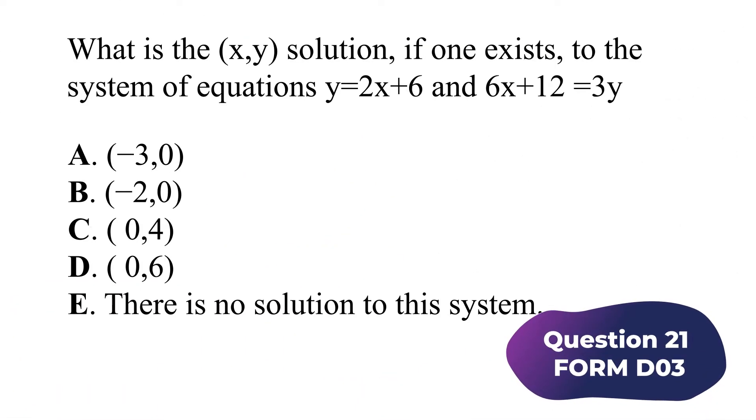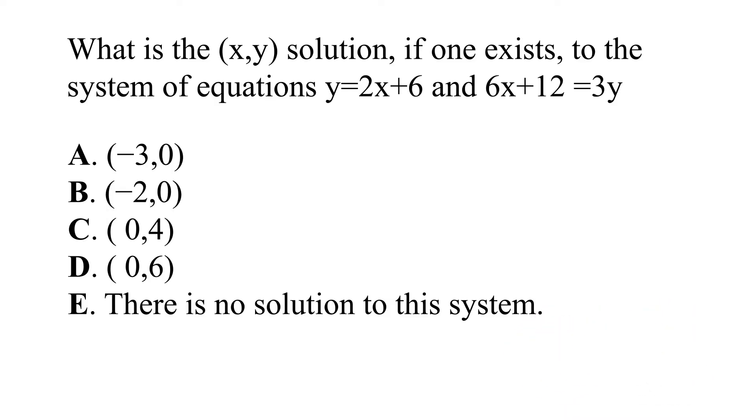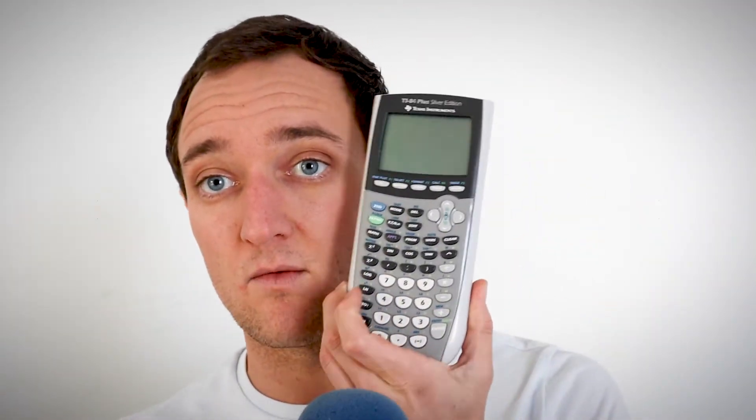So starting out here, what is the XY solution if one exists to the systems of equations Y equals 2X plus 6 and 6X plus 12 equals 3Y? So this is question 21 on the ACT, specifically form D-03. You can find all of these officially released ACTs in the link below. So check those out if you want to follow along. But let's actually just go ahead and start solving this. So I'm going to show you how to do it with your calculator.